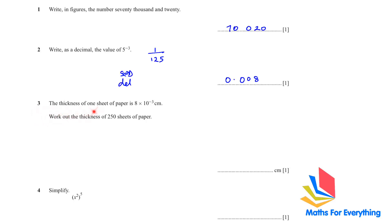Question 3: the thickness of one sheet of paper is 8 × 10^(−3) centimeters. Work out the thickness of 250 sheets of paper. So 8 × 10^(−3) multiplied by 250 will give you 2.